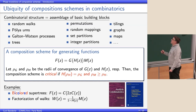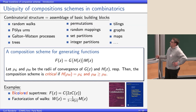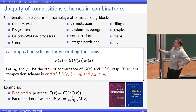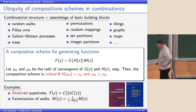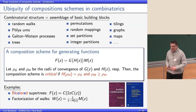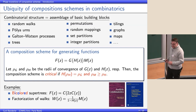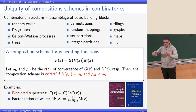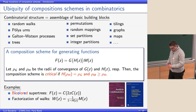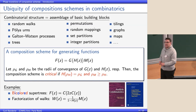Examples of such compositions include bicolored supertrees, which are expressed as a function involving a combination of Catalan numbers. For walks you have a sequence of some type of primitive arches times some meanders at the end — this is also of the same scheme. For thousands of examples you can look in the nice book by Flajolet and Sedgewick, Analytic Combinatorics, which explains how to derive generating functions and use complex analysis to get asymptotics.